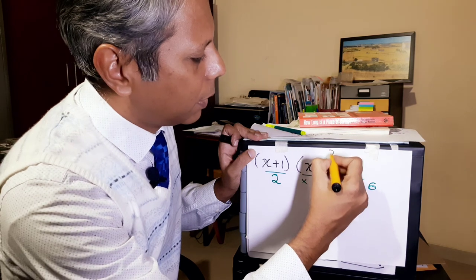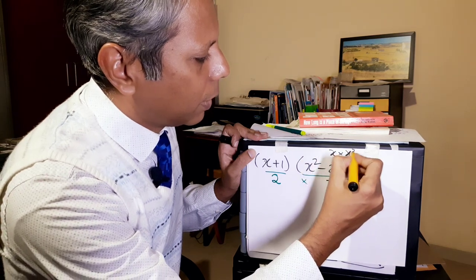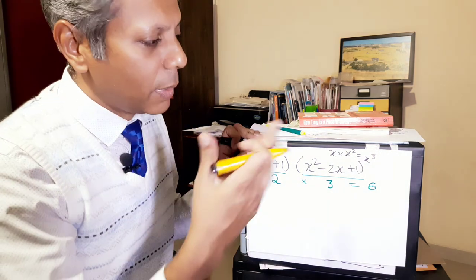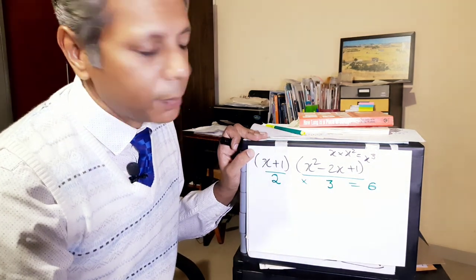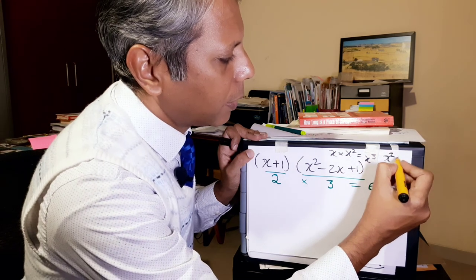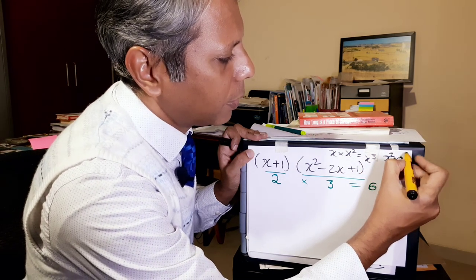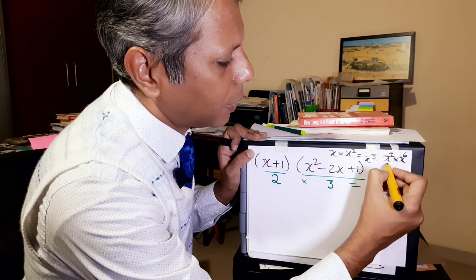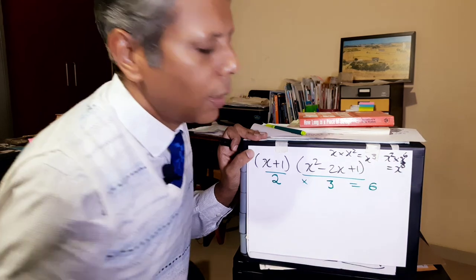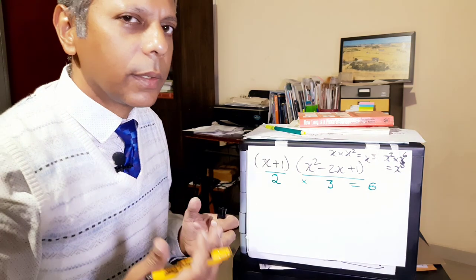So x into x squared equals x cubed. So this thing can keep changing. If it is x squared into x to the power 6, then that's actually x to the power 8. So these things are something that you need to be quite convincing and practice with.